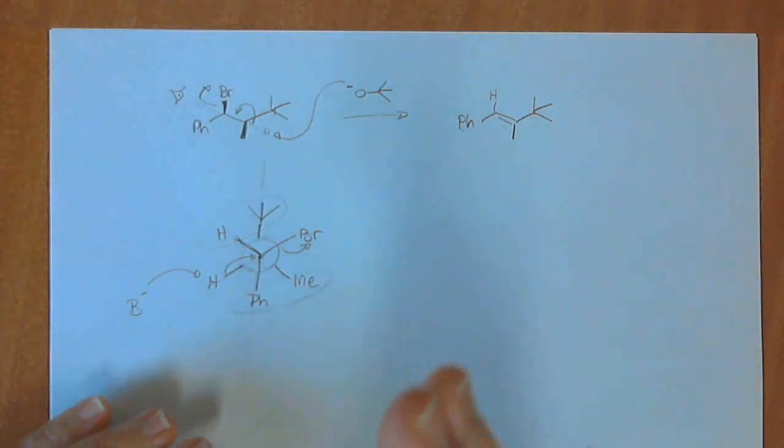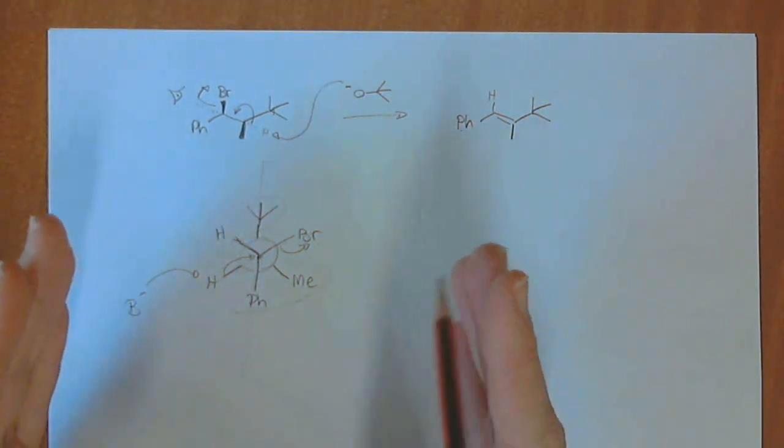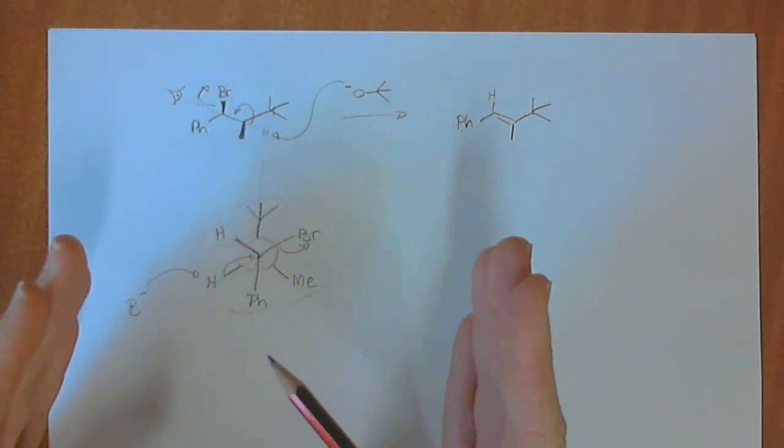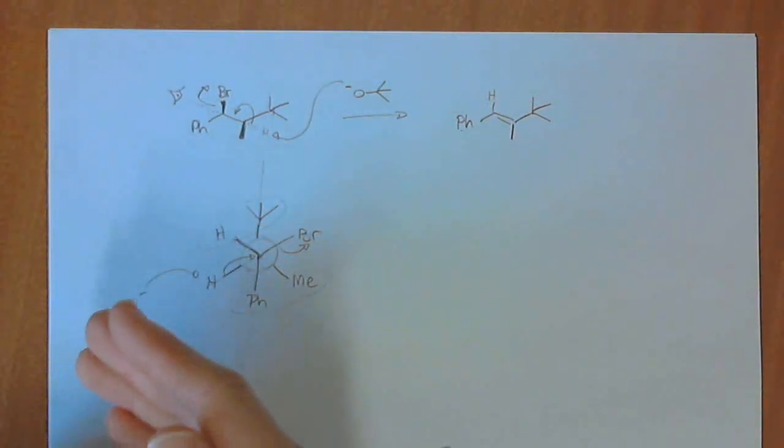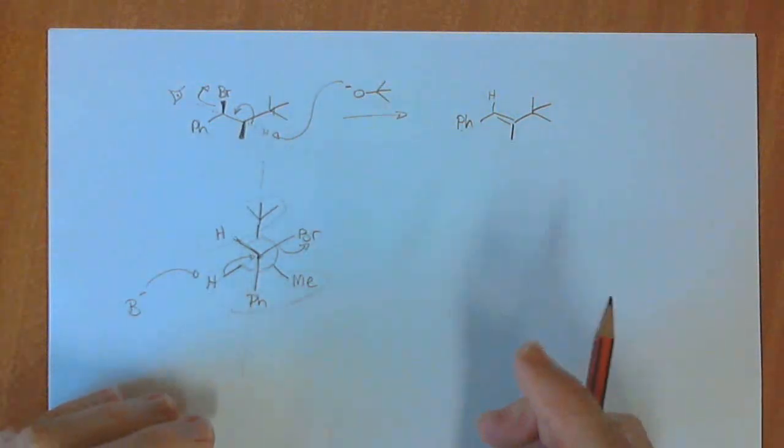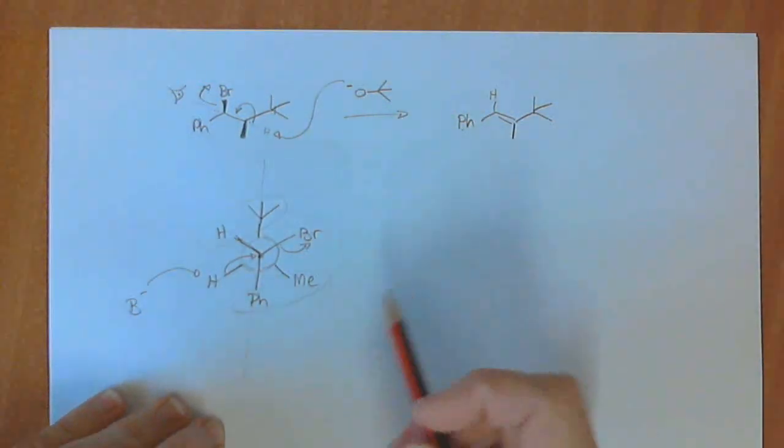But if stereospecific reactions have everything to do with the way the reaction occurs means that the orbitals themselves can only react in one particular way, and that's all we get. You don't get a mixture.